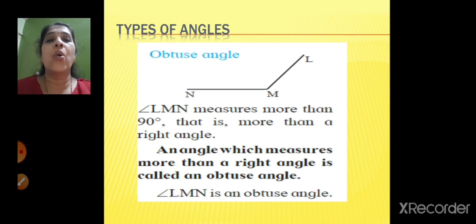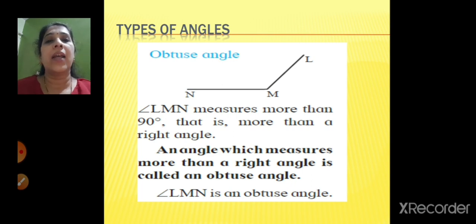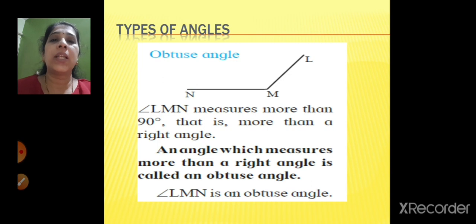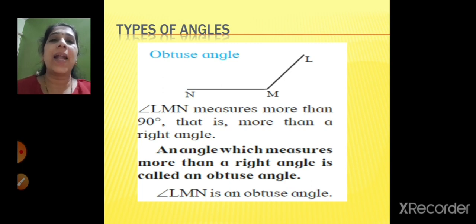An obtuse angle is more than a right angle, meaning more than 90 degrees. I hope students you have understood how to draw an angle of a given measure, how to measure a given angle, and the definitions of all three types of angles. In the next session we will see about parallel and perpendicular lines. Till then, goodbye.